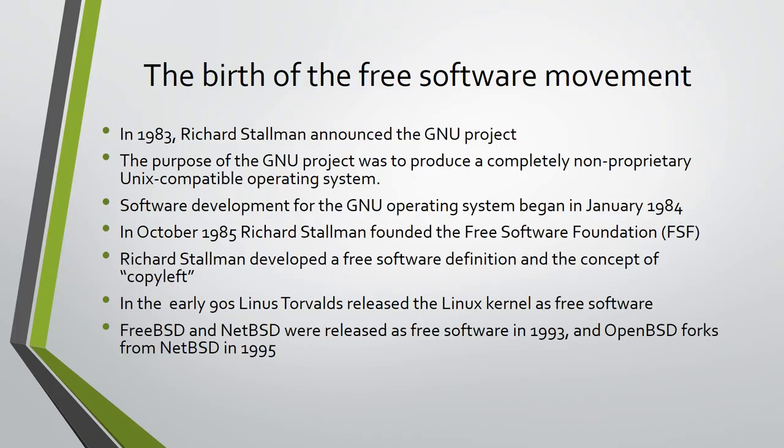In the early 90s, Linus Torvalds released the Linux kernel as free software. The GNU project lacked a kernel, and the Linux kernel provided the missing part that made a GNU system possible. FreeBSD and NetBSD, both derived from 386BSD, were released as free software in 1993, and OpenBSD forked from NetBSD in 1995.